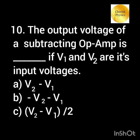The output voltage of a subtracting op-amp is ___, if V1 and V2 are its input voltages. Thank you.